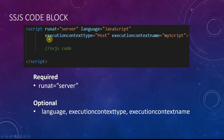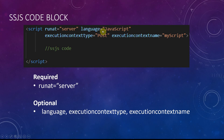To summarize: for most use cases when you want to use an SSJS code block, you just need to use the script tag with runat equal to server. You don't need to worry about all the other parameters — this is just for your knowledge.